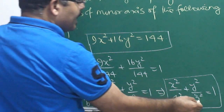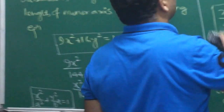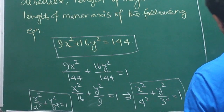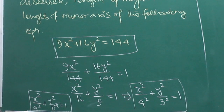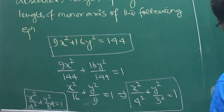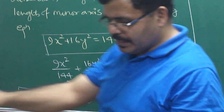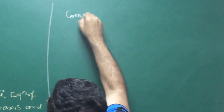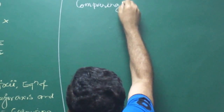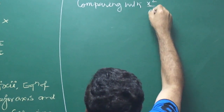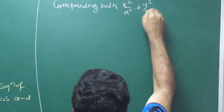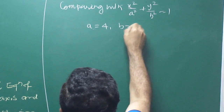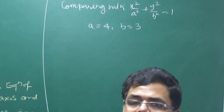Comparing with x squared by a squared plus y squared by b squared equals 1, then A is equal to 4 and B is equal to 3. A, B, and E — these three things are fundamental, whether it is a parabola, ellipse, or hyperbola.